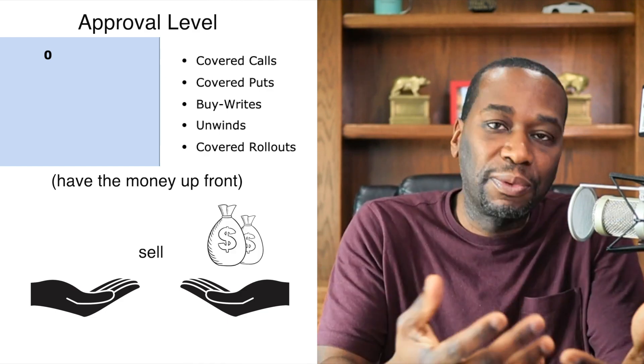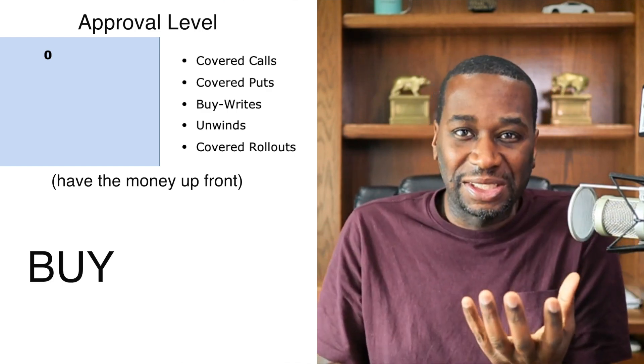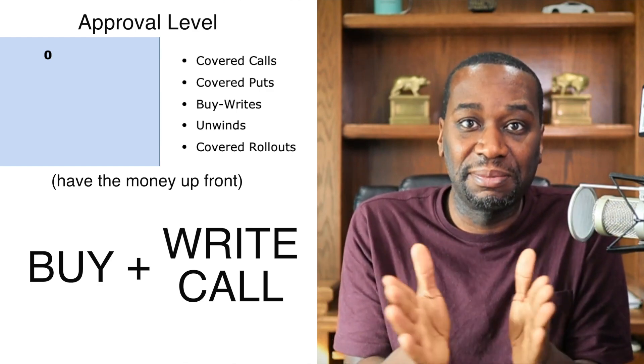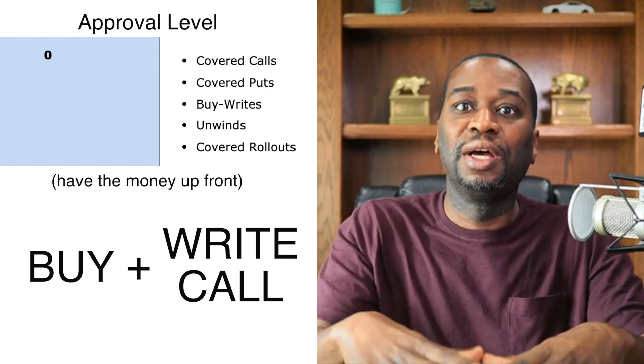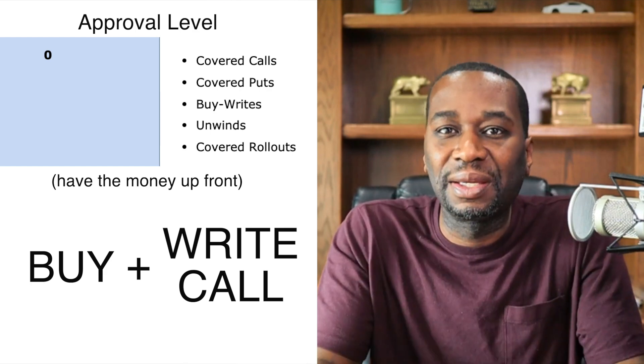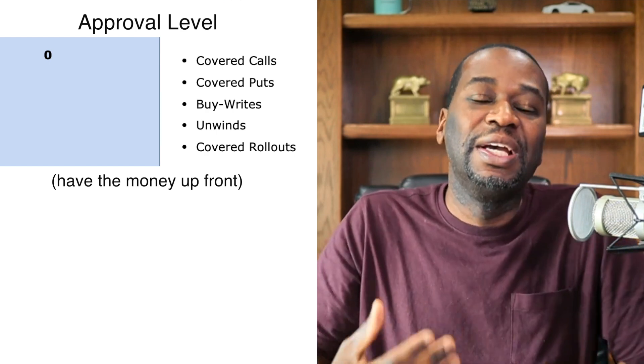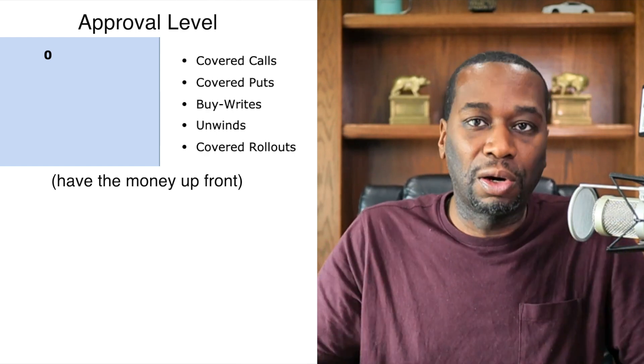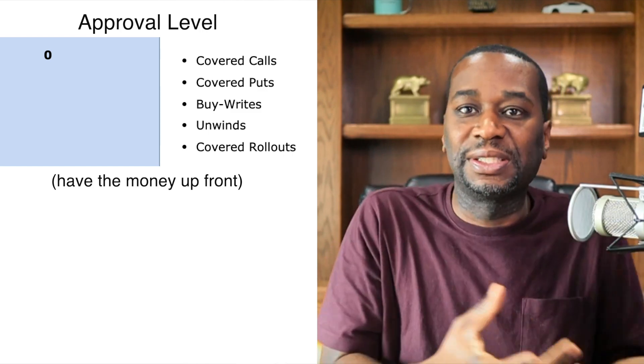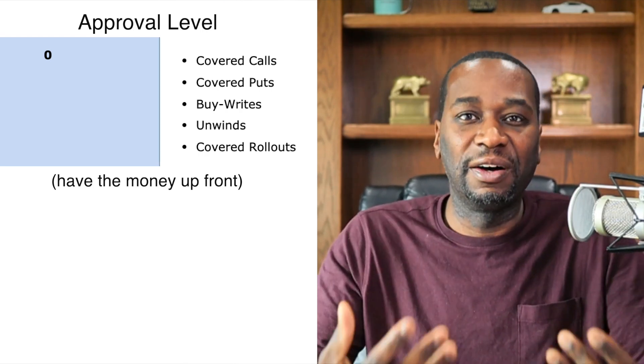Same thing with covered puts. Buy-writes, a buy-write for example means you buy a stock and you write a call on it simultaneously, like at the same time. So it's like one order: you buy the stock, you write a call against it. So again, these are strategies that basically mean you already have the money or you already have the stock to deliver in the event that the option calls you out or you get put to. You already have the money to buy the stock or you've already bought the stock and you can deliver it to that person. So these are the most basic level of being approved to do some type of options.